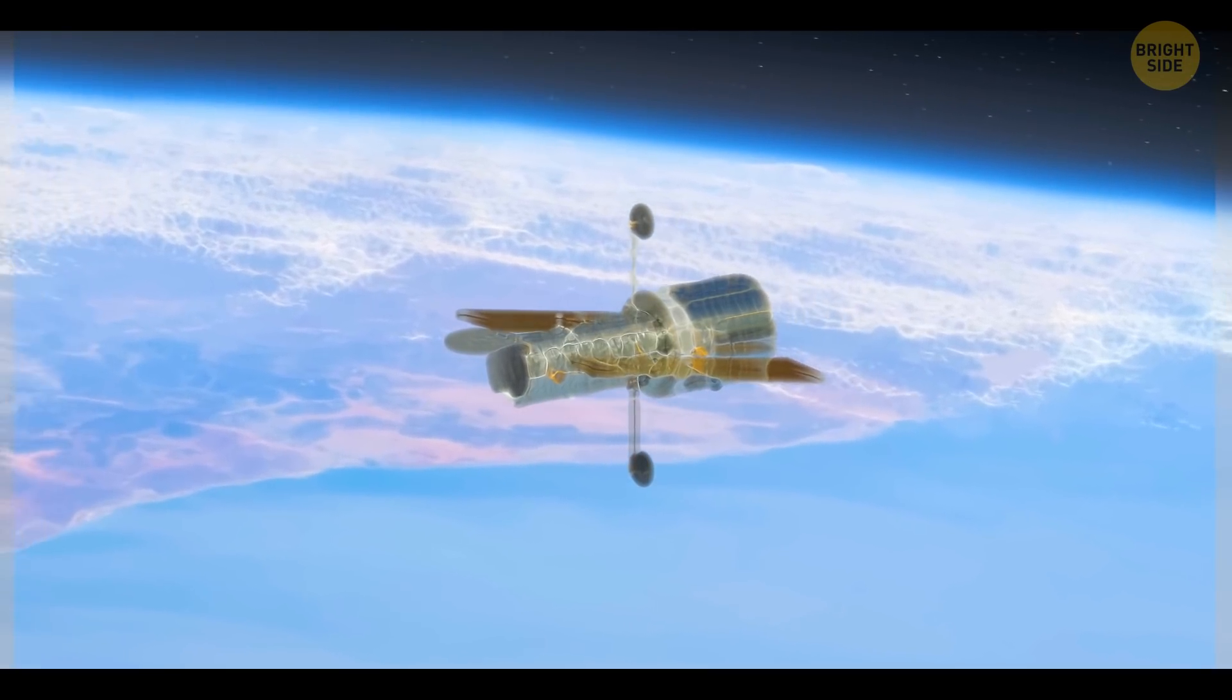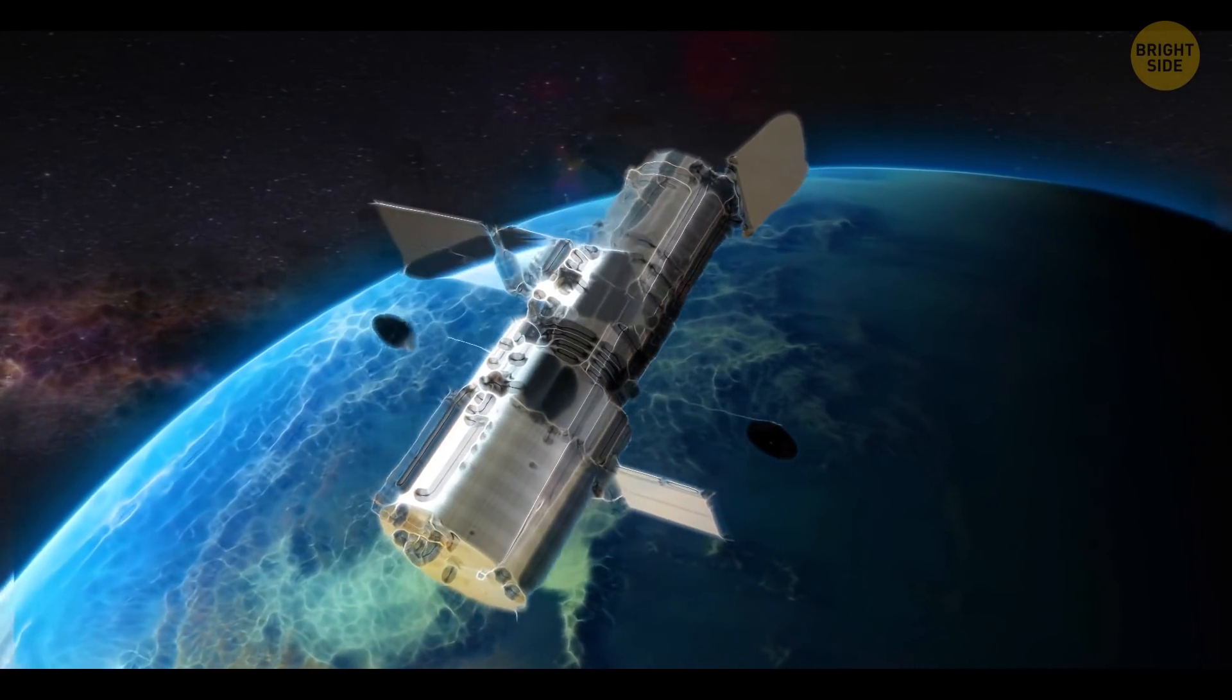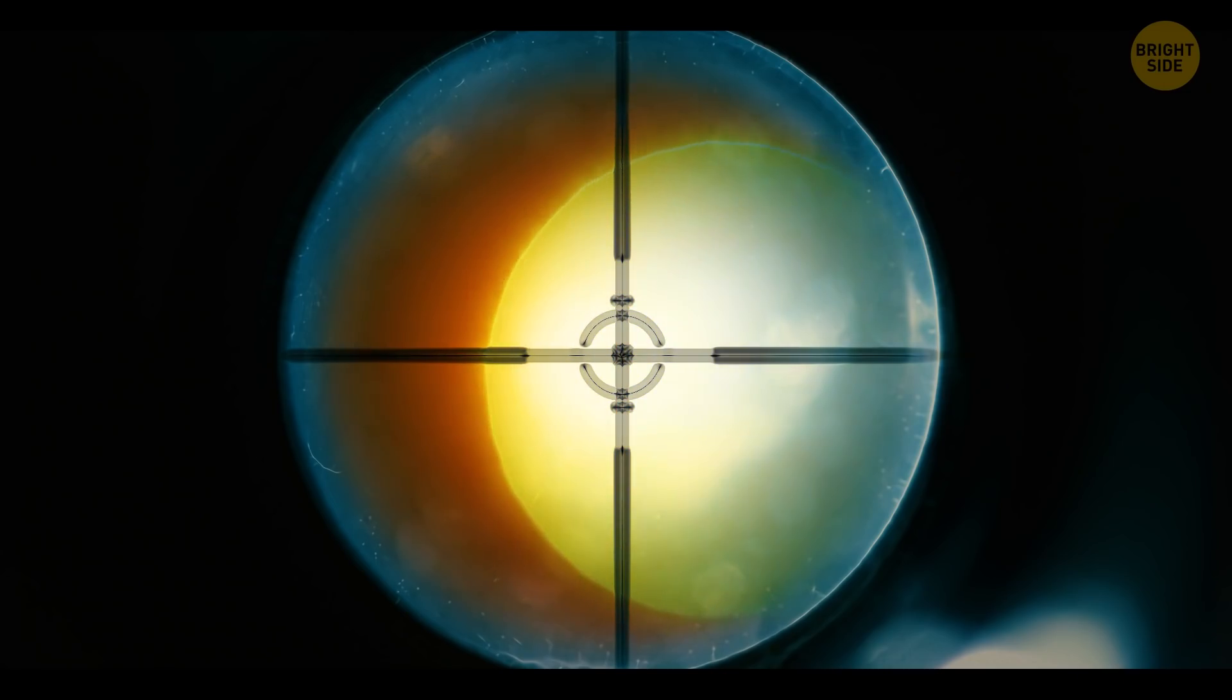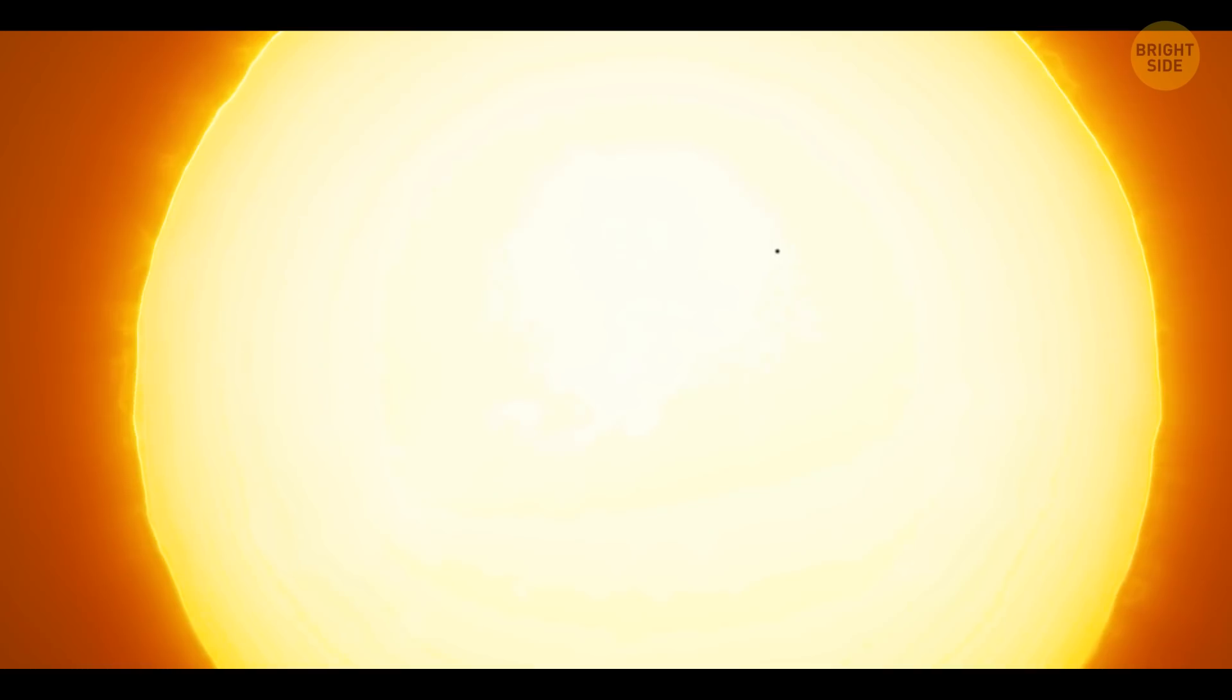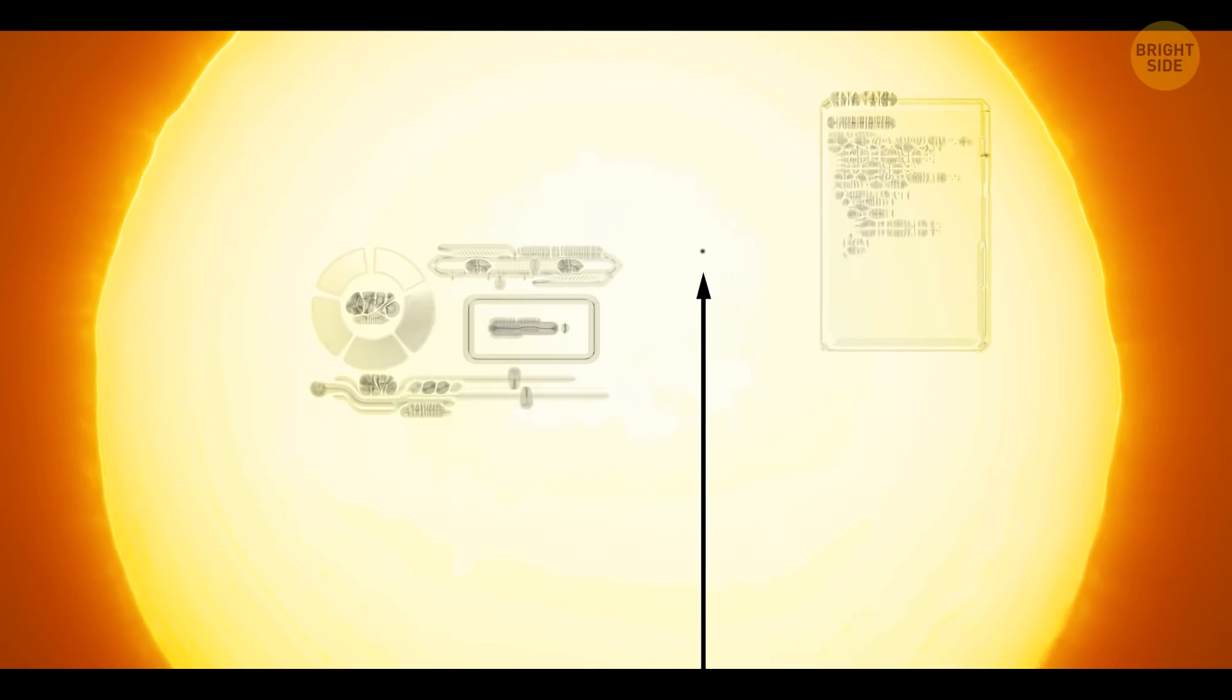All the other planets have been discovered by the transit method. That's when we point our telescopes directly at a star and watch its brightness change. When there's a slight drop in the star's brightness, that's when a planet has passed between us and the star. Like this dot. We have a short period of time while the planet is in the background of the star to determine its size and speed.